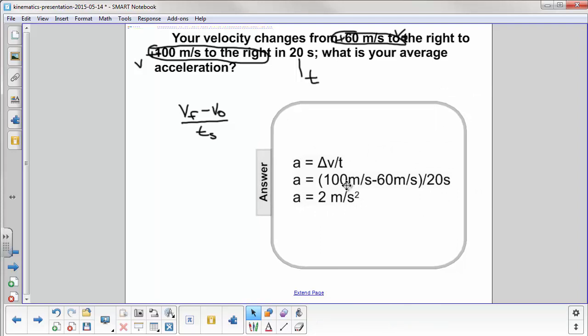And here you have your final velocity, which you can see we labeled here as 100 meters per second, minus the initial, divided by 20 seconds, and we get 2 meters per second squared.